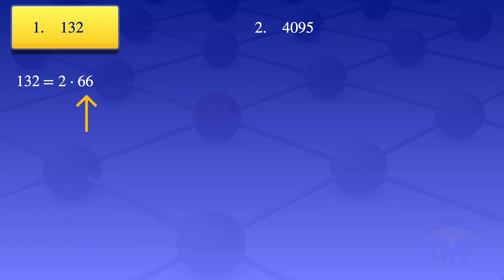We now look at the 66 and check if it can be divided by 2 — we see it's possible. So 66 divided by 2 gives us 33, so that product gives us 2 times 2 times 33.